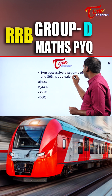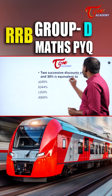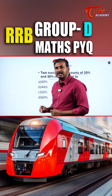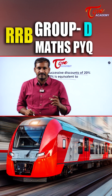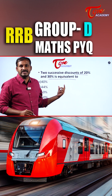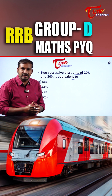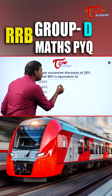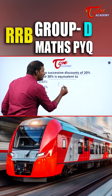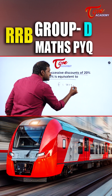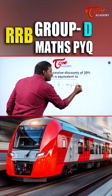If you observe carefully, here we have two successive discounts of 30% and 20% — what is it equivalent to? What actually is the formula, students? For effective percentage, we have the formula x plus y plus xy by 100.